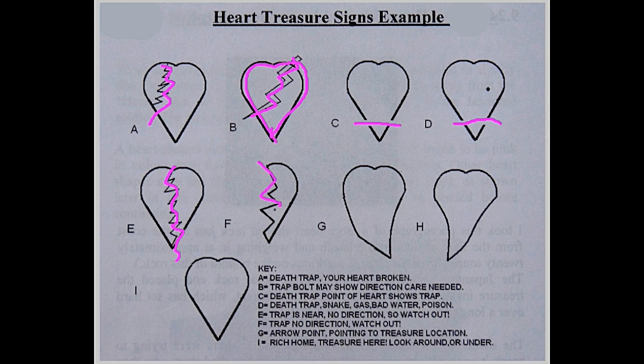This downward broken heart is an indication that the trap is near. There's no direction, so just watch out for the trap. Be careful when digging. Don't always strike hard with your bar - it's dangerous. You might hit a landmine or vintage bomb.